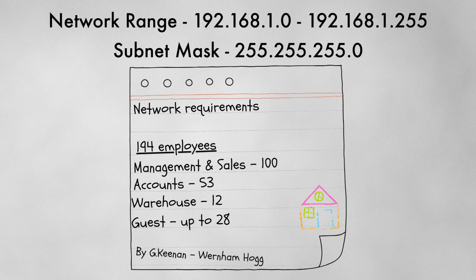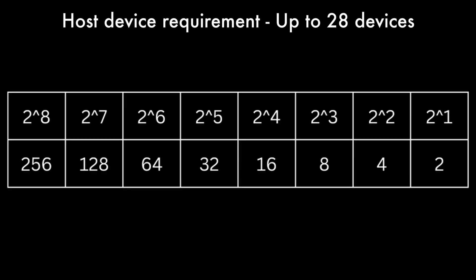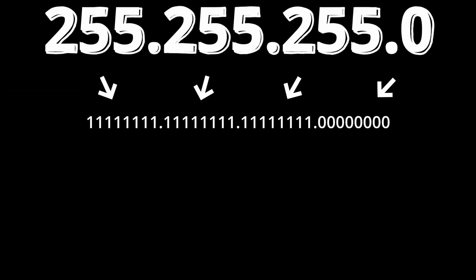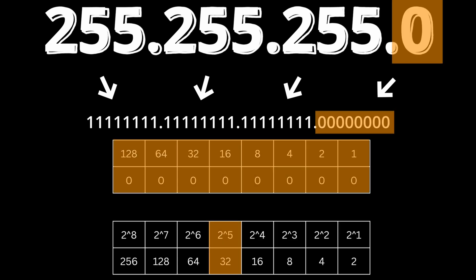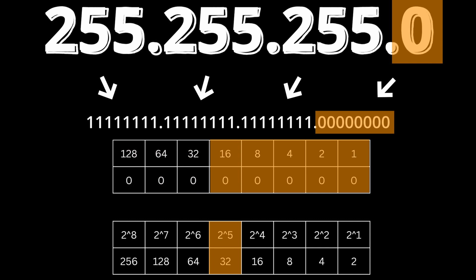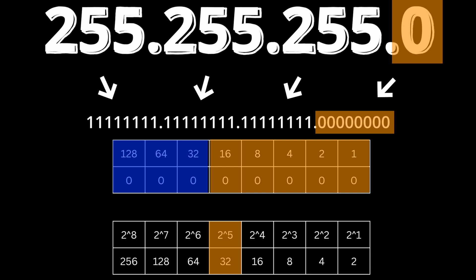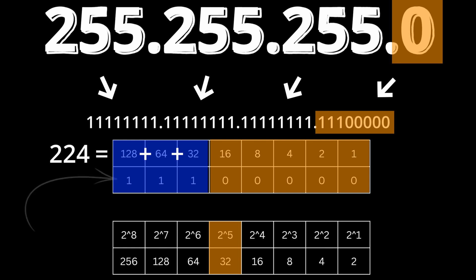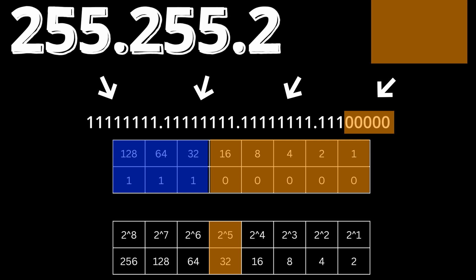Now the guest network, which needs to accommodate up to 28 host devices. Referring to the powers of two chart: 2^5=32. We could expand to 64 addresses, but since it's a guest network, we'll hard-stop at 32. Starting with a 24-bit subnet mask, placing the powers of two chart below the last octet — 2^5=32 — we leave bits 4 through 8 as host bits and switch the first three bits to network portions. Adding those binary values gives us 224, so our subnet mask is now 255.255.255.224.